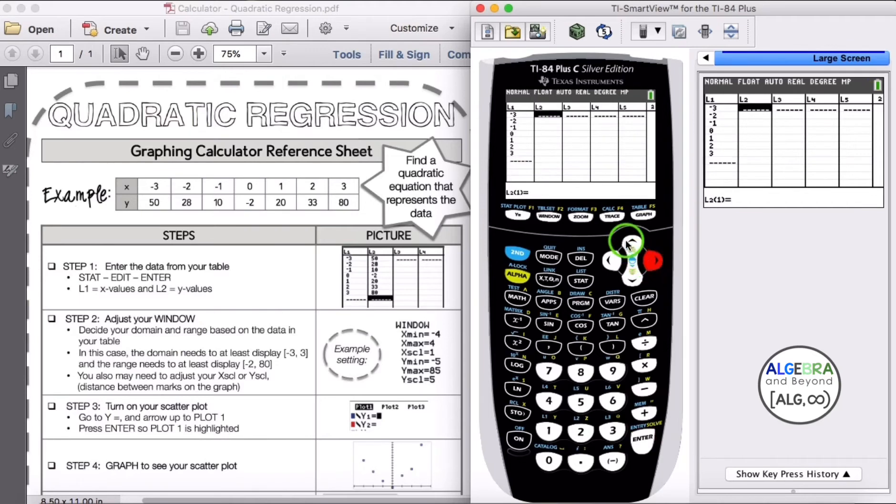Okay, then I'm going to arrow over to column 2 and enter that data. So I have 50, 28, 10, negative 2, 20, 33, and 80.